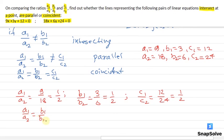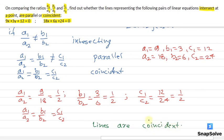That means a1 by a2 equals b1 by b2 equals c1 by c2. This is the third condition, which means the lines are coincident. This is the solution for this question. I hope it is understood. Thank you very much.